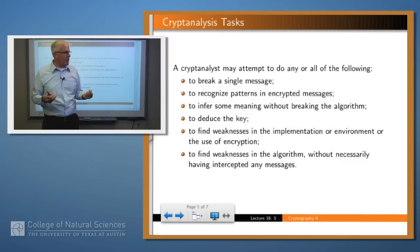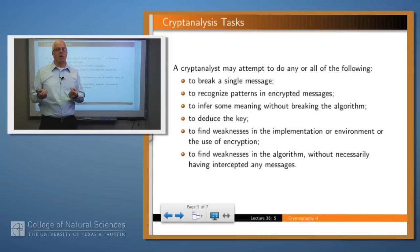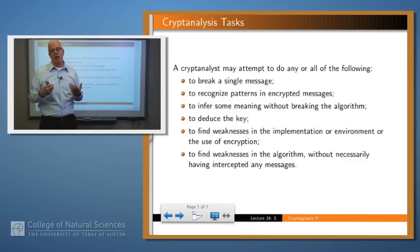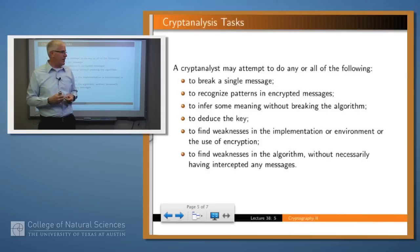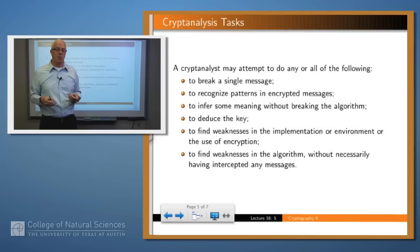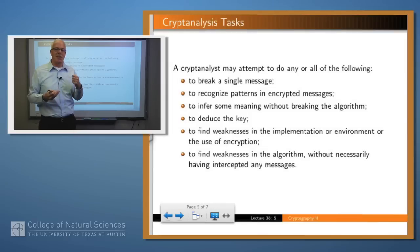You might want to find weaknesses in the implementation or the environment. For example, in World War II the Germans had a very strong crypto machine called the Enigma machine, but they were careless about using it sometimes and reused the key over several days — and the British and Americans were able to get a lot of leverage from that. You may also want to find weaknesses in the algorithm itself. Many modern crypto algorithms are published, and you can read about them and try to figure out whether there are weaknesses in the algorithm as opposed to its implementation.